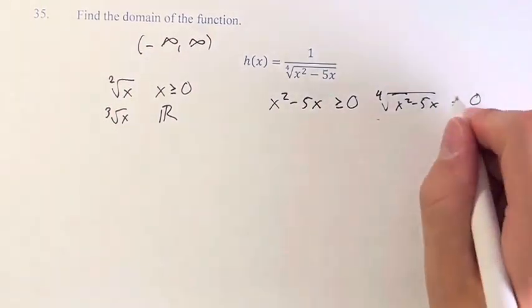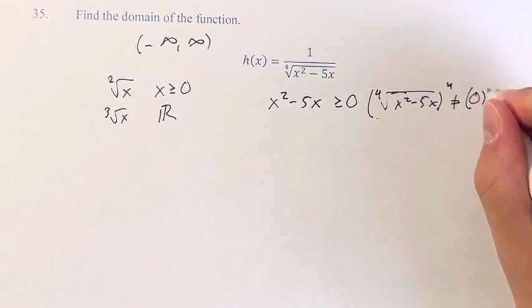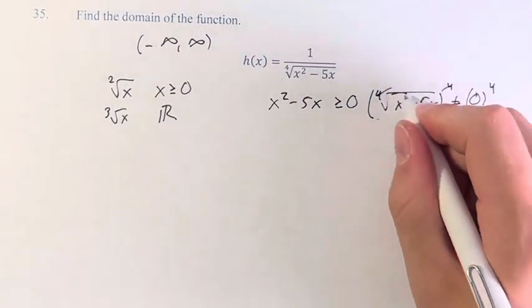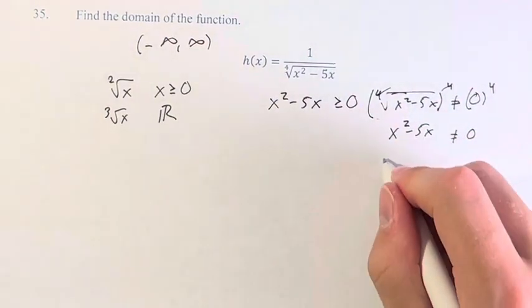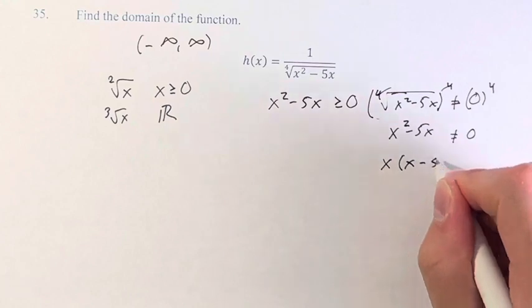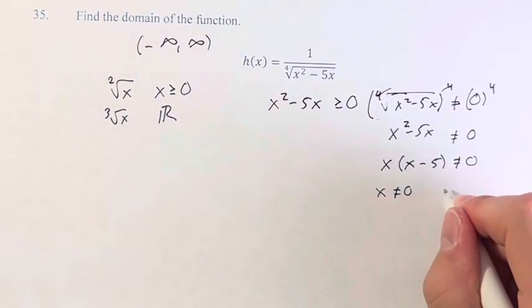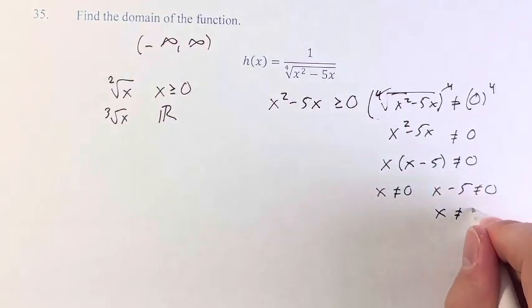So we can do this one first. It's a little bit easier. Take the fourth power of both sides. These cancel. 0 to the fourth is just 0. And we're left with here x squared minus 5x. Factor out an x. So x times x minus 5 is not equal to 0. Therefore, x cannot be equal to 0 and x minus 5 cannot be equal to 0. And therefore, x cannot be equal to 5 as well.